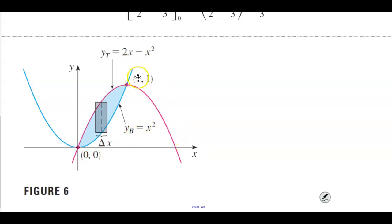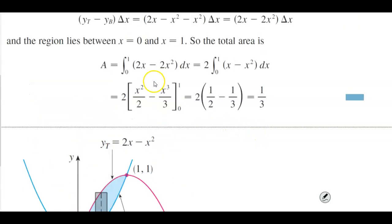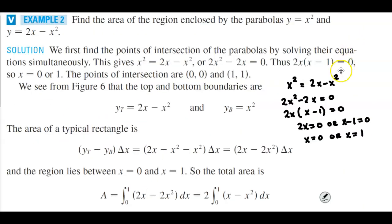In order to find these boundary points, we can use the trace function on the calculator. Or, one way of finding the exact points is by setting the two equations equal to each other. We know that y equals x squared and y equals 2x minus x squared.